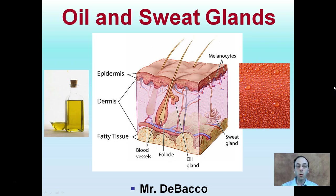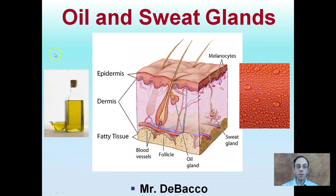Here we're going to look at oil and sweat glands. By the end of this you'll be able to provide a comparison between oil-producing glands and sweat-producing glands. This is actually vegetable oil, but it's used to give you a visual comparison between the two.